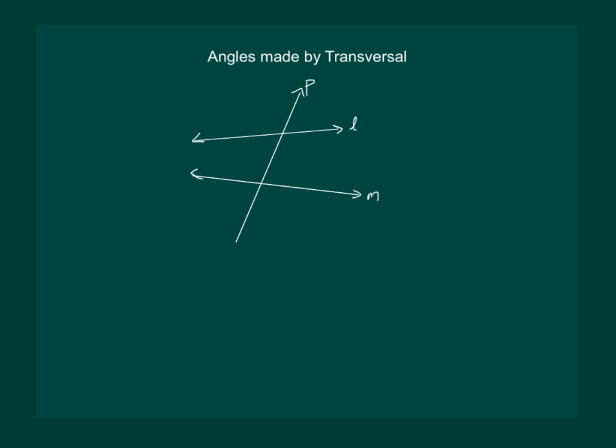Consider two lines L and M and let P be a transversal on it. Then, eight angles are formed.